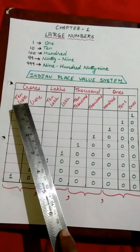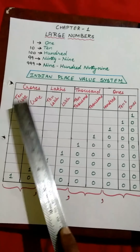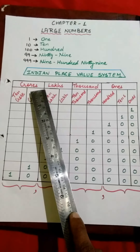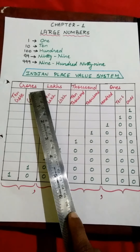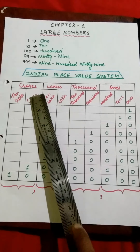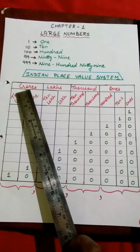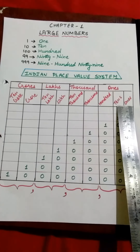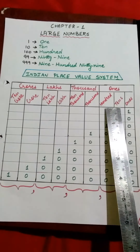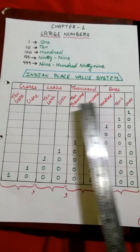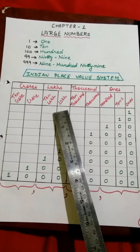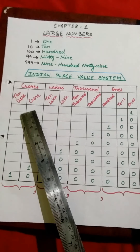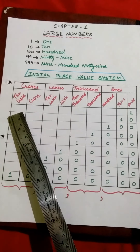Then comes Crore and Ten Crore. This is called the Crores block. So in the Indian Place Value System, we start the numbering from Ones, Tens, Hundreds, Thousands, Ten Thousands, Lakh, Ten Lakh, Crore, and Ten Crore.